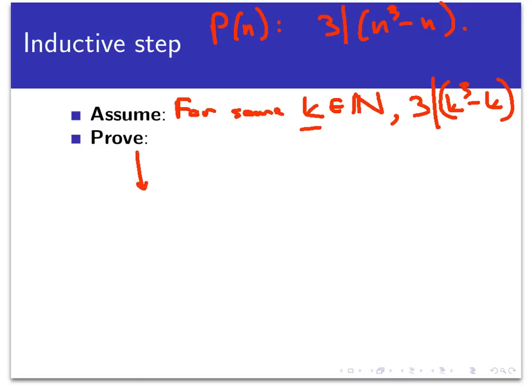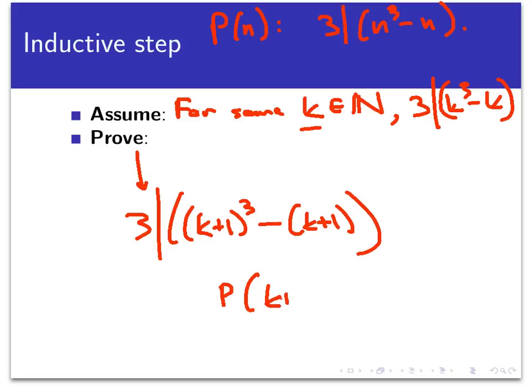And then what we're going to prove is that 3 divides k+1 cubed minus k+1. I'm going to replace the n here, follow my laser pointer, with a k+1. And I'm just going to literally do that first. So (k+1)³ minus (k+1). That's what I want to show. That is P(k+1).